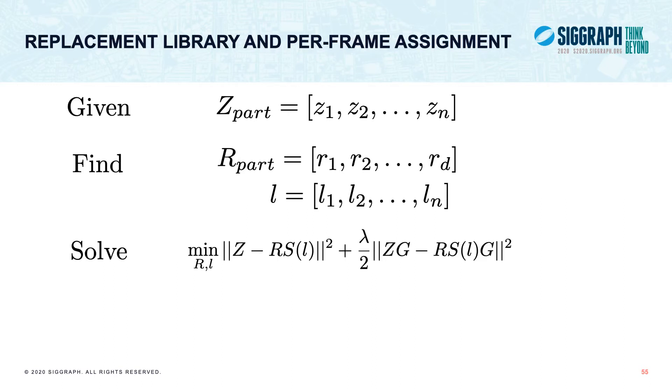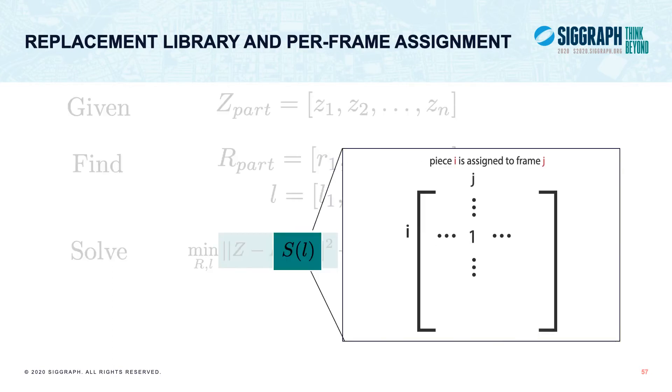To find this matrix R and vector L, we want to solve an energy minimization problem. The first term is a geometry term that tries to make sure the difference between the frame mesh and its corresponding library piece is as small as possible. Here the matrix S is a D by N sparse matrix where ijth entry is 1 when piece I from the library matrix R is assigned to the frame J.